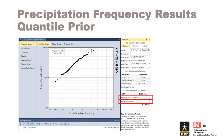Quantile prior inputs are entered in the properties window of a Bayesian estimation analysis under the general tab. Start by clicking on the Enable Priors on Quantiles checkbox. When this box is checked, an additional menu will appear with a default AEP value and a default set of distribution parameter values.